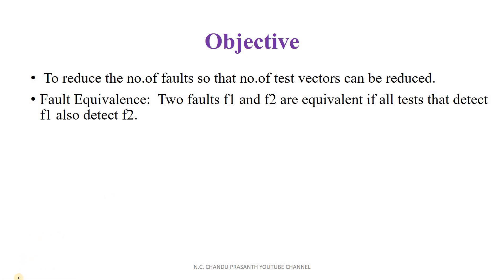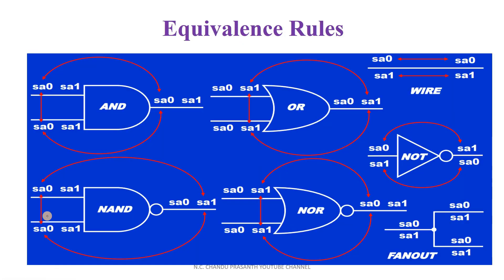See here the Fault Equivalence rules. We have seen different kinds of gates and different kinds of faults like stuck-at-0 and stuck-at-1. An AND gate can detect totally 6 faults, an OR gate can detect 6 faults, whereas a NOT gate can detect only 4 faults.